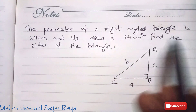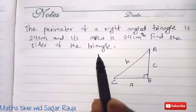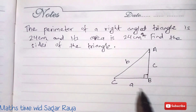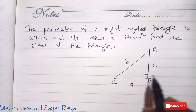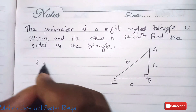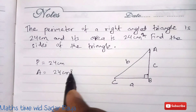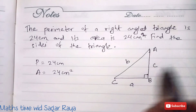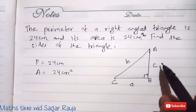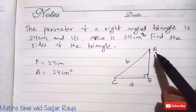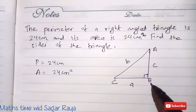The question: the perimeter of a right angle triangle is 24 cm and its area is 24 cm². Find the sides of the triangle. Since the question says right angle triangle, I have already drawn one here. The perimeter is given as 24 cm and the area is given as 24 cm². We need to find all the sides — we do not know side a, side b, or side c.